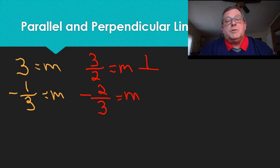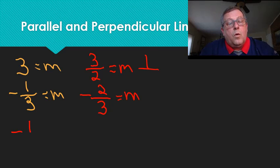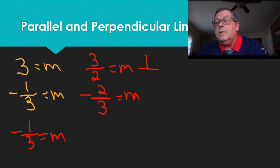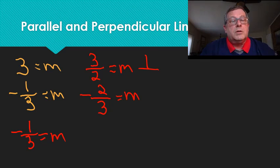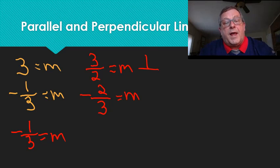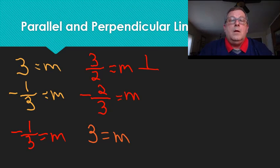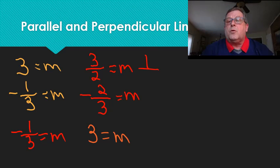Let's do one more. If the slope of a line is negative 1 over 3, and we want the slope of a line perpendicular to it, it's going to be the negative inverse of negative 1 over 3 — which is simply positive 3. I hope that helps clarify the negative inverse and negative reciprocal concept.